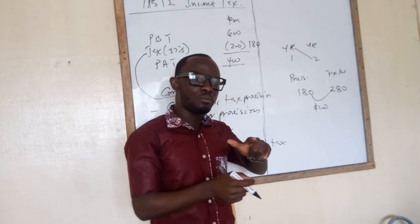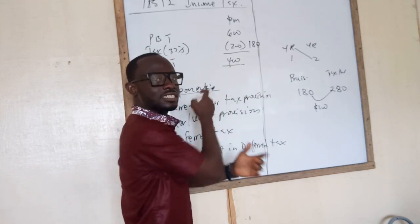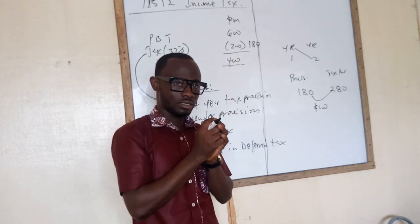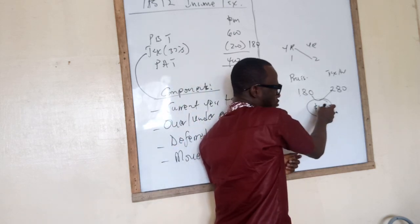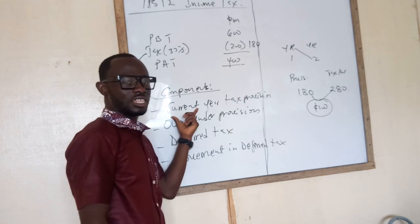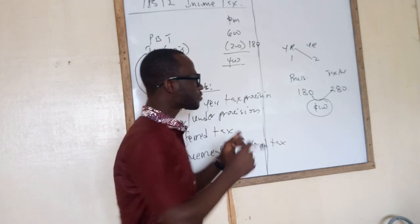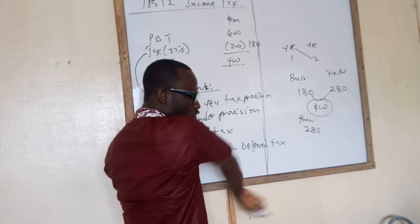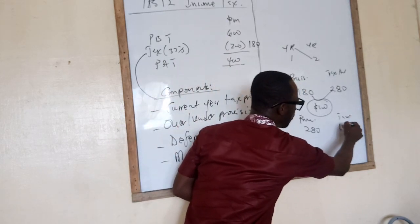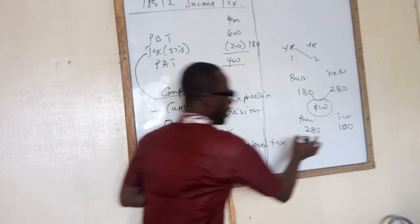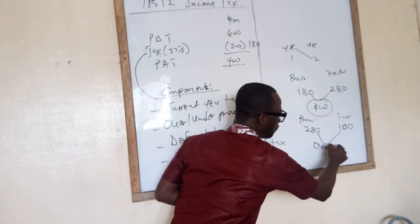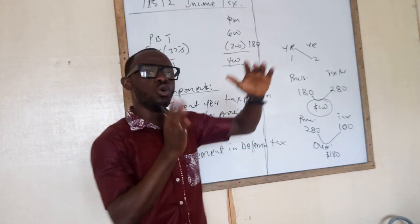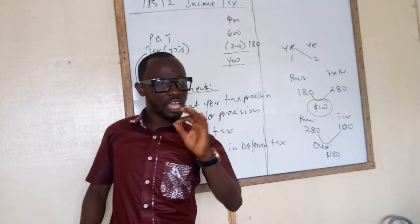It means you have under provided for tax. In the current year, that under provision of tax will be added to the current year tax provision that you have made — in other words, it will be subtracted from your profit. The reverse is true: if you provided $280 but the tax authority says you are paying $100, meaning you have over provided by $180, you will add it back to your profit or subtract it from tax payable.